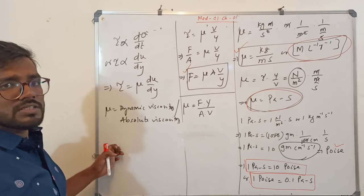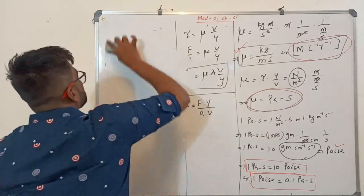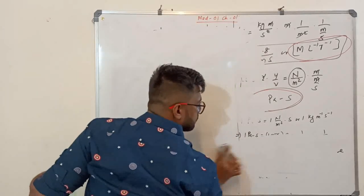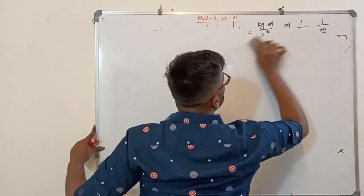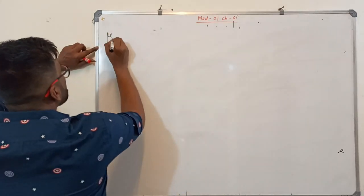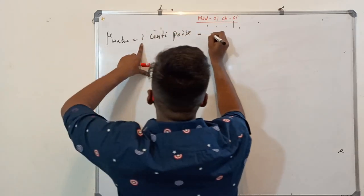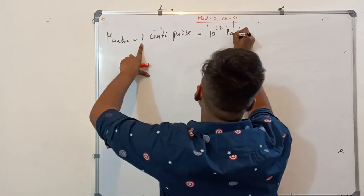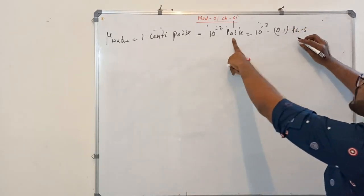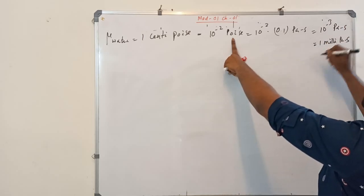We have already discussed all these things in detail in the video. Now, for water: what is the dynamic viscosity of water? The dynamic viscosity of water is 1 centipoise. 1 centipoise equals 10⁻² Poise, and since 1 Poise equals 0.1 Pascal·second, this gives 10⁻³ Pascal·second, which is 1 millipascal·second. That is the dynamic viscosity of water.